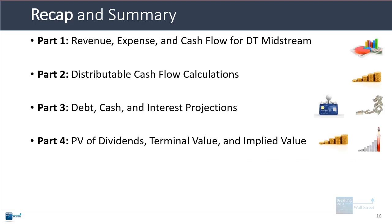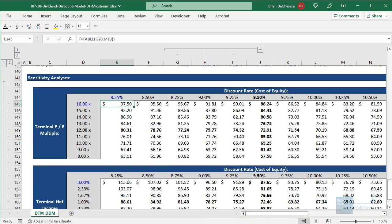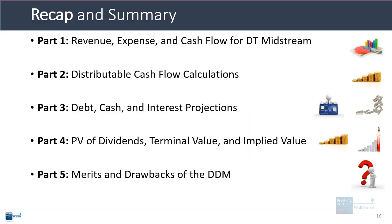We calculated the PV of dividends, the terminal value, and the implied value, and the sensitivities show the company is at least somewhat undervalued, though the exact percentage is debatable. The dividend discount model is good in some ways because it's based on reality more closely than a standard DCF, but it's very difficult to set up and use correctly. The assumptions are harder to come up with, you need to understand the company's capital structure in much more detail, and in many cases companies don't disclose enough information for you to use this properly. It's also completely different for banks, so check out our coverage for the bank dividend discount model.